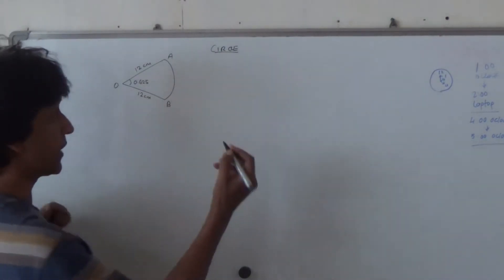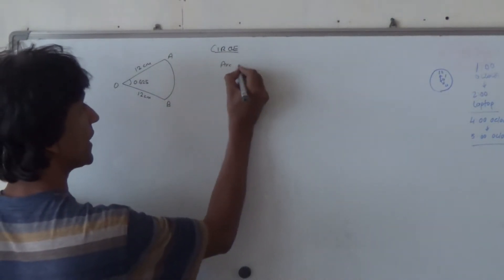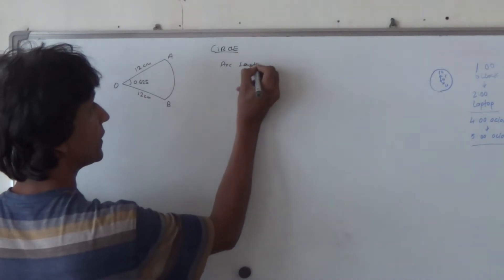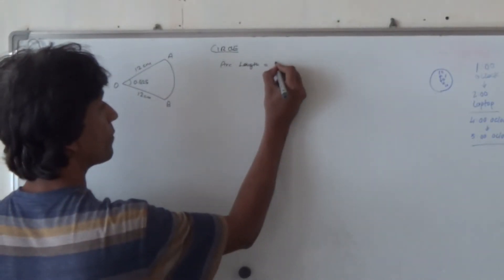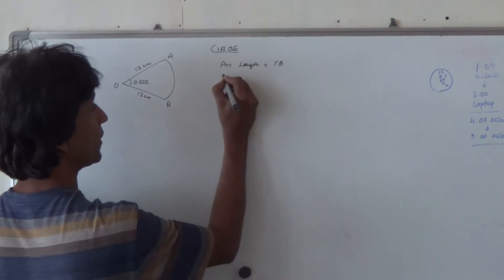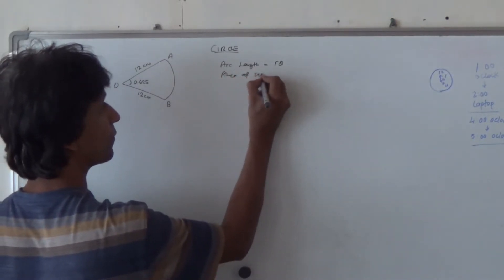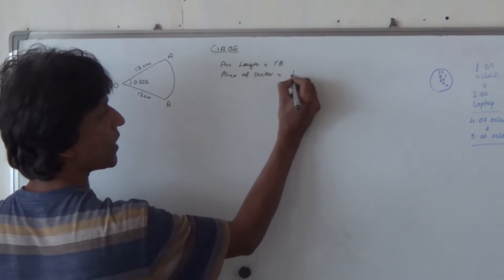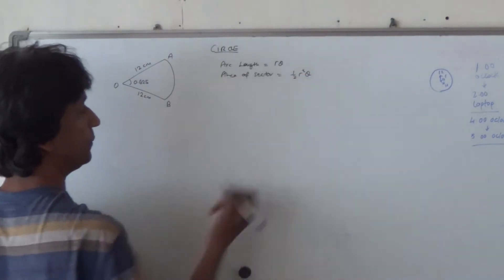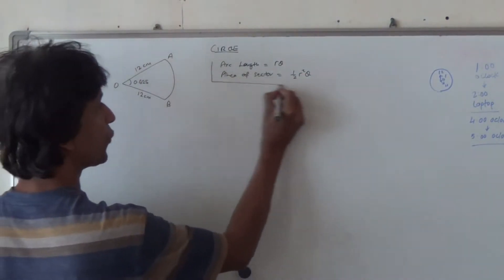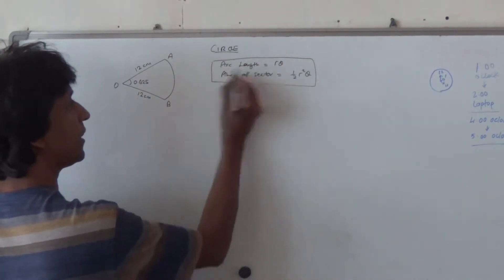Now the formula that we normally use is arc length is equal to r theta, whereas for area of sector we use half r square theta. So applying this formula we should be able to find the arc length.